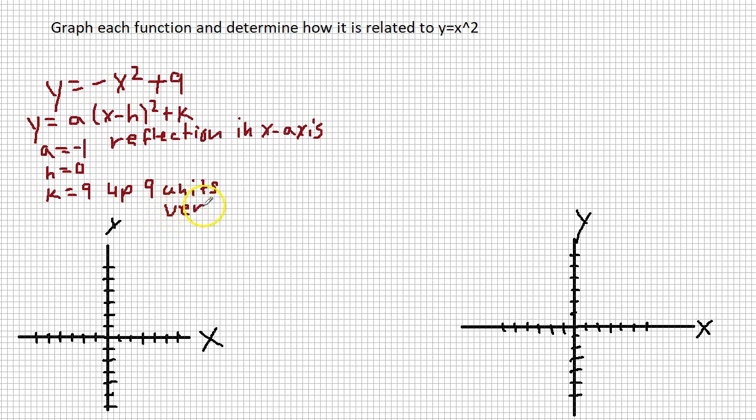So vertex is going to be at 0, 9. So if I go left or right, 0 up 9, there's 2, 4, 6, 8. Here is 9 right here. Right there is my vertex. It is also my y-intercept.